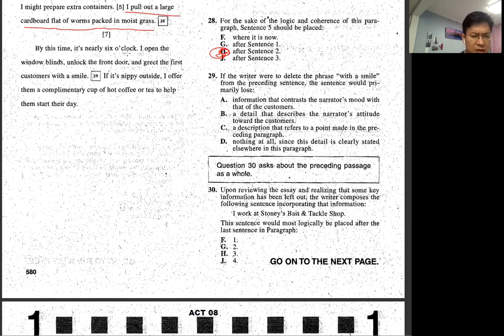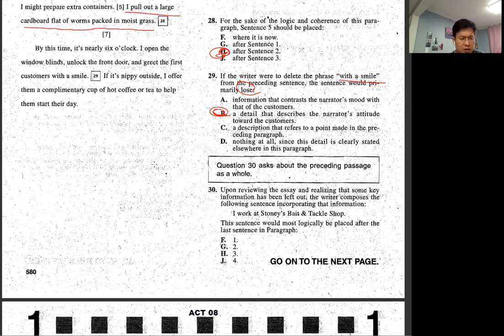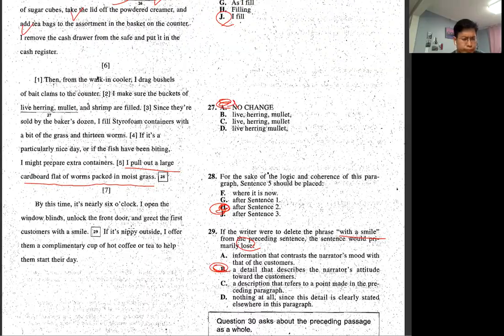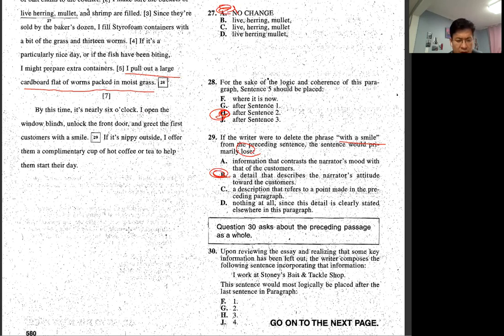By this time it's nearly six o'clock, I open window of lines, unlock the front door, and greet the first customer with a smile. Okay. With the smile, blues. Information that I removed. Now E, attitude. Upon reviewing the essay, realizing some key information left out, the writer composed the following sentence incorporate accent. I work at Stoney's bait and tackle shop and place after. It should be like very beginning because this is the name of the shop. Yeah, so it's after.